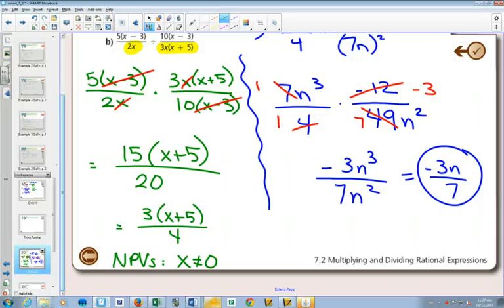So one of our non-permissible values is x can't be 0. In our second yellow highlighted part, it's already factored. In the first part, x can't be 0, but we've already said that. In the second part, x can't be negative 5. So we'd add that one as well.